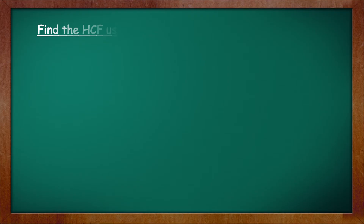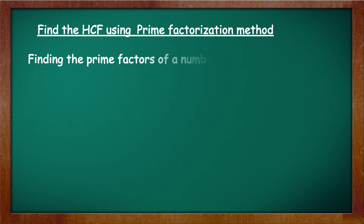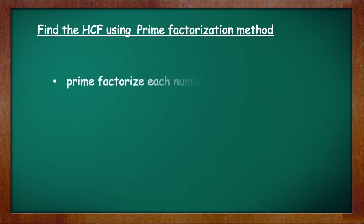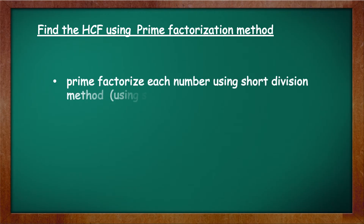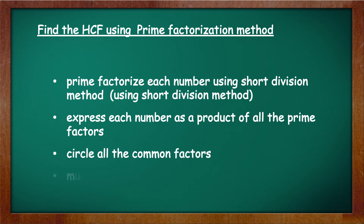HCF is equal to 3 into 3, which is equal to 9. Now you will learn one more method to find the HCF, which is called the prime factorization method. You already know the meaning of prime factorization — it is finding the prime factors of a number. In this method, first prime factorize each of the given numbers using short division method. Then express each number as a product of all the prime factors. After that, circle all the common factors and in the end, multiply the common factors to get the HCF.